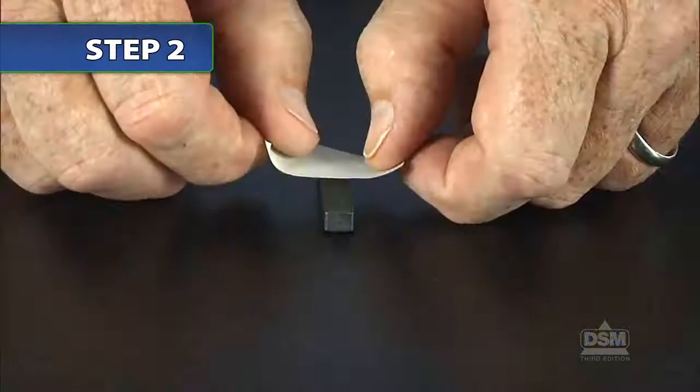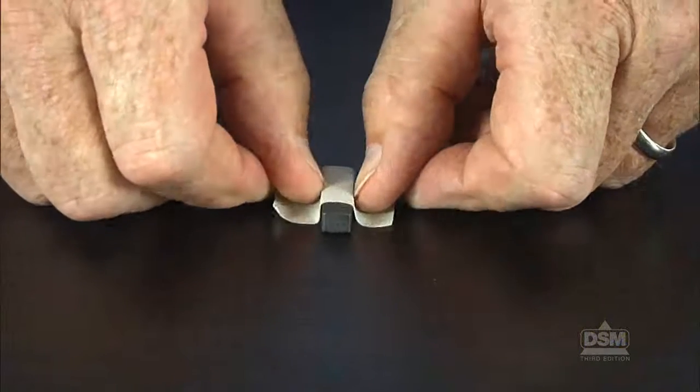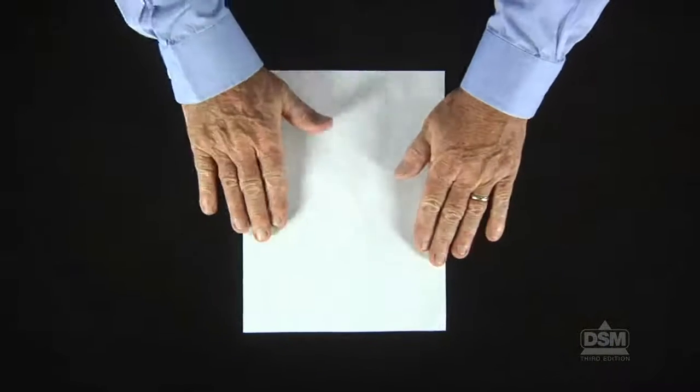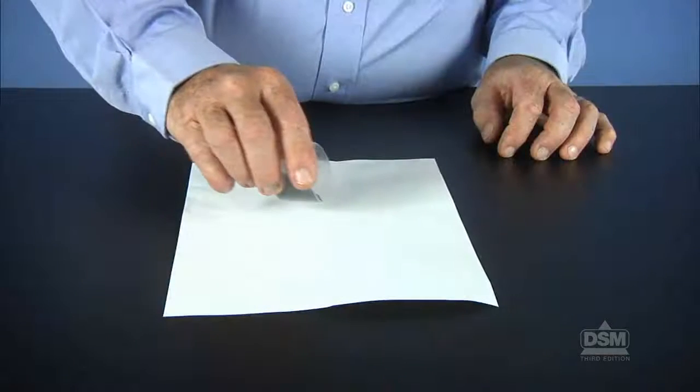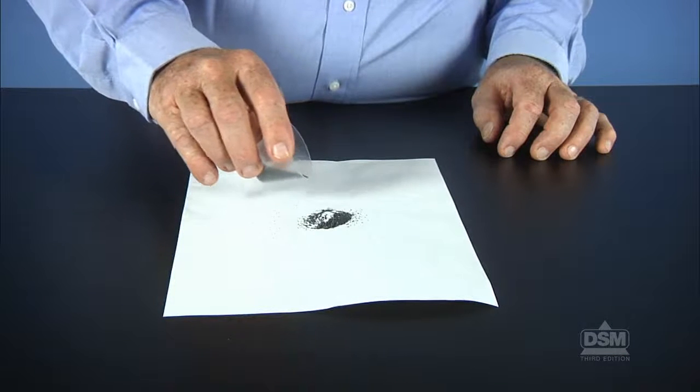Instruct students to tape the small magnet to the top of one of their desks and to place a sheet of paper over the magnet. Then, have them sprinkle the iron filings onto the paper over the magnet.